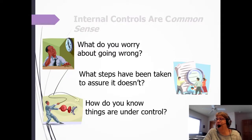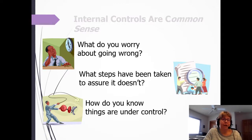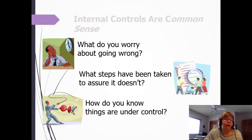If you think about it, it's really common sense. If you are part of a business, what do you worry about going wrong? What can you do to make sure it doesn't happen, or if you can't prevent it, how can you detect it? How do you get your business back up and running if there is a major threat? And how do you know things are under control — can you monitor this and make changes if you need to?